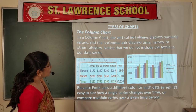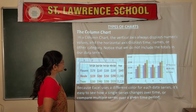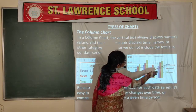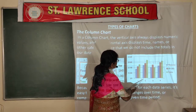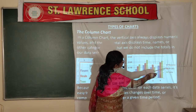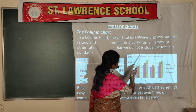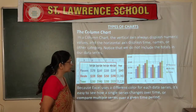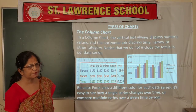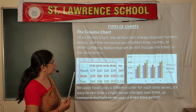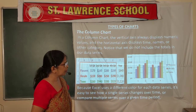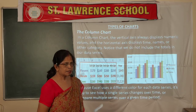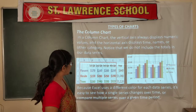It is easy to see how a single series changes over time or to compare multiple series over a given time period. In a column chart, through the legend you can distinguish — for example, flowers are represented in purple, shrubs in orange, and trees in green. You can also reformat the chart, changing background color or data series colors.